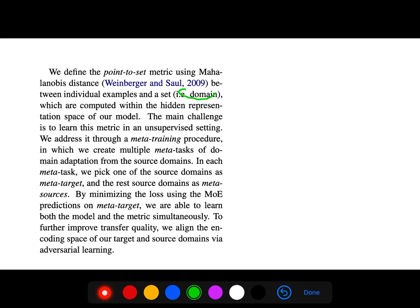Our model learns this point-to-set metric automatically without additional supervision. So we define point-to-set metric using Mahalanobis distance between individual examples and a set. Our set, for example, could be a domain. So we have a domain and we have a point - what is the distance between this domain and this point? The main challenge is to learn this metric in an unsupervised setting. We address it through a meta-training procedure in which we create multiple meta tasks of domain adaptation from source domains. In each meta task we pick one of the source domains as meta-target and the rest of source domains as meta-sources. By minimizing the loss using the MoE prediction and meta-target, we are able to learn both the model and metrics simultaneously.